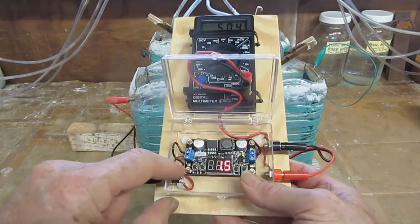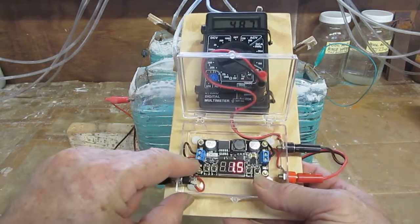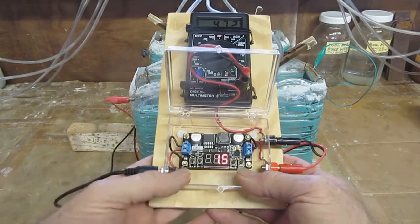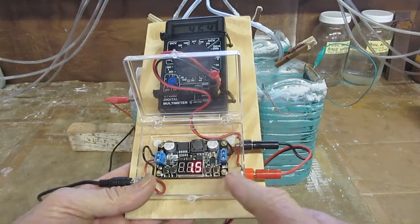It's got a positive and negative input, and it's got red and black wires here. The black wire is negative and the red wire is positive. It's got similar wires on this side.